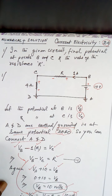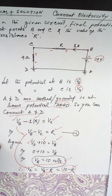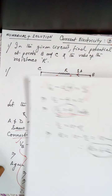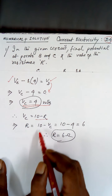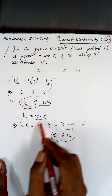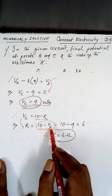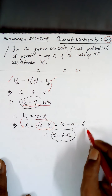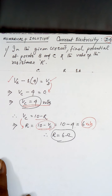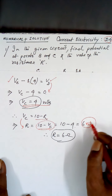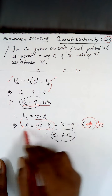Now, VC equals 10 minus R. From this, R equals 10 minus VC. VC we just calculated as 4. So R equals 10 minus 4, which is 6. Therefore R equals 6 ohm.